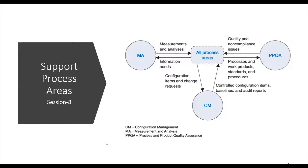In general, the support process areas address processes that are targeted towards the project and can also address processes that apply more generally to the organization at the organizational level. For example, process and product quality assurance can be used with all the process areas to provide an objective evaluation. So this quality assurance activity can be considered under the support process area.